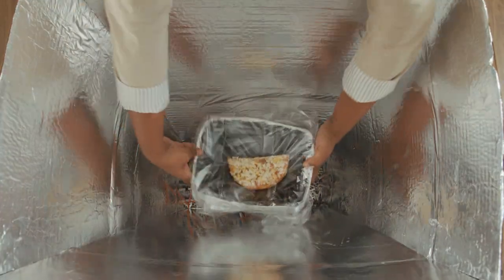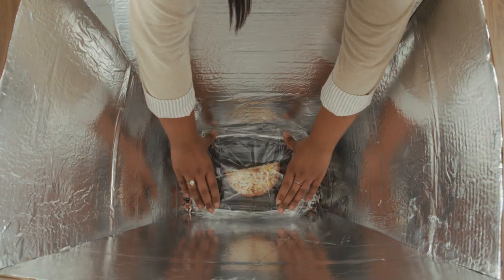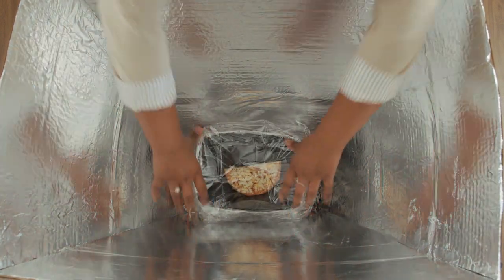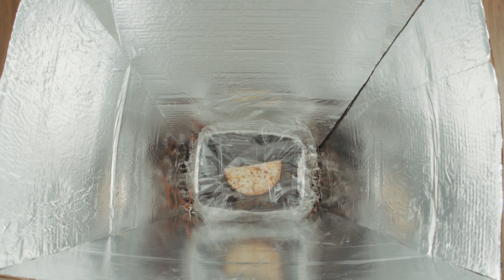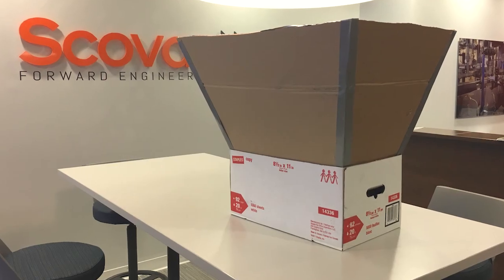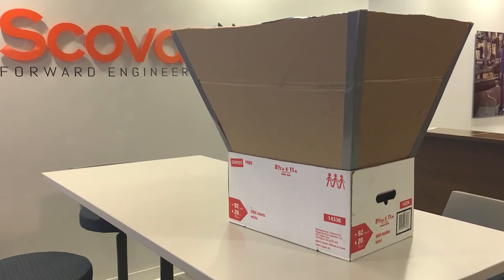Place the baking chamber tightly into the bottom of the reflector. Outside, arrange your cooker so that the cooking chamber is directly facing the sun. If you have any questions, ask an adult for help.